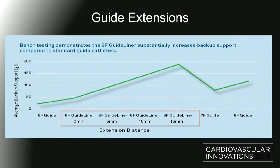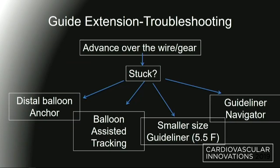It's important to understand that the further in the vessel you go with the guide extension, the more backup and support you're going to have — and there is data supporting that. If you put the GuideLiner 15 millimeters in the vessel, you're going to have much more backup. Sometimes we take the GuideLiner all the way to the crux of the right coronary, but you have to be careful, because it can create ischemia — something you have to be fully aware of.